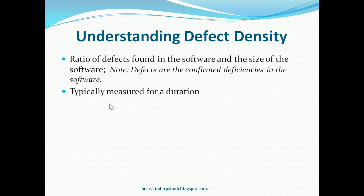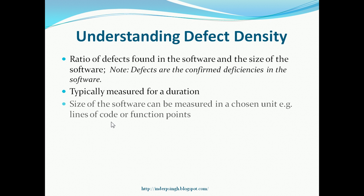Defect density is typically measured for a duration. The chosen duration can be a calendar month, quarter, or year, or even the entire software development lifecycle. The size of the software can be measured in a chosen unit, for example, lines of code (LOC) or function points.